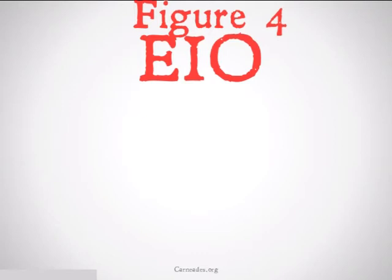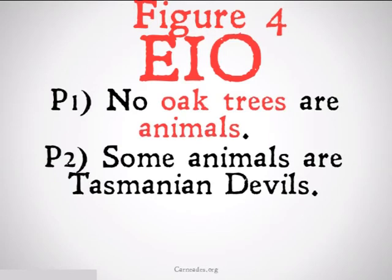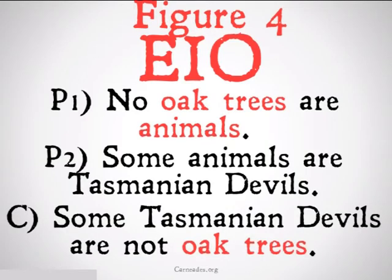Figure four, EIO: no oak trees are animals, some animals are Tasmanian devils, therefore some Tasmanian devils are not oak trees. Oak trees is distributed in our conclusion, and we see it's also distributed in the first premise, so it passes rule two. It's also going to pass rule one because animals, our middle term, is also going to be distributed in the first premise.